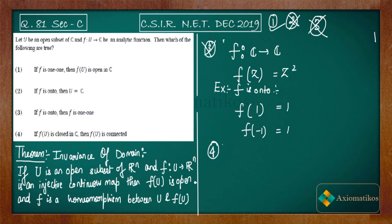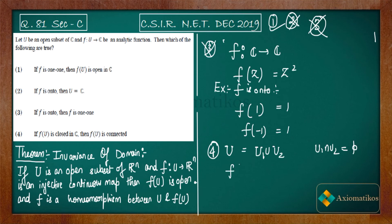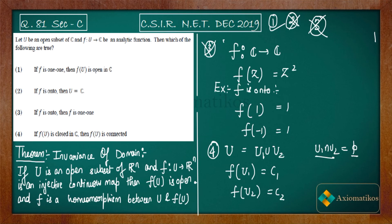For option four: if f(U) is closed in ℂ, then f(U) is connected. The issue here is that connectivity of U was never given. Choose two disjoint open sets U₁ and U₂, and define f to map all of U₁ to a constant c₁ and all of U₂ to a constant c₂. Their union U = U₁ ∪ U₂ is open. Since the sets are disjoint and each piece is constant, this function is analytic.